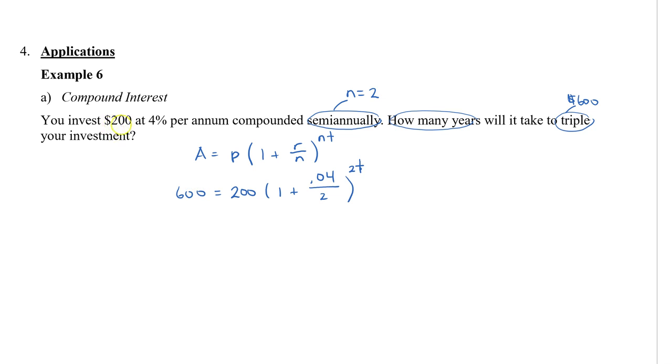If it doesn't tell you the amount of investment, you could also just use 1 and 3. Let's divide both sides by 200 so we don't have this coefficient in the front. So we get 3 equals, and inside here let's simplify that. 1 plus 0.04 divided by 2 is going to be 1.02, and this is to the power of 2T.